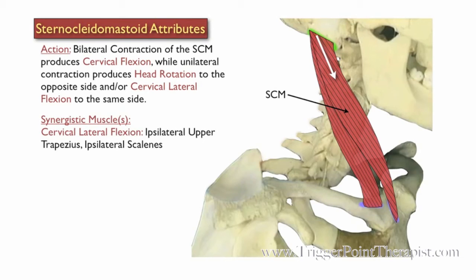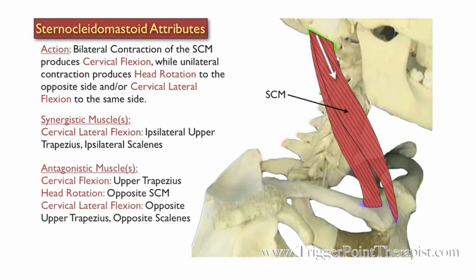The ipsilateral upper trapezius and the ipsilateral scalenes assist the SCM during cervical lateral flexion. The upper trapezius opposes the SCM during cervical flexion. The opposite SCM opposes the SCM during head rotation. The opposite upper trapezius and the opposite scalenes oppose the SCM during cervical lateral flexion.